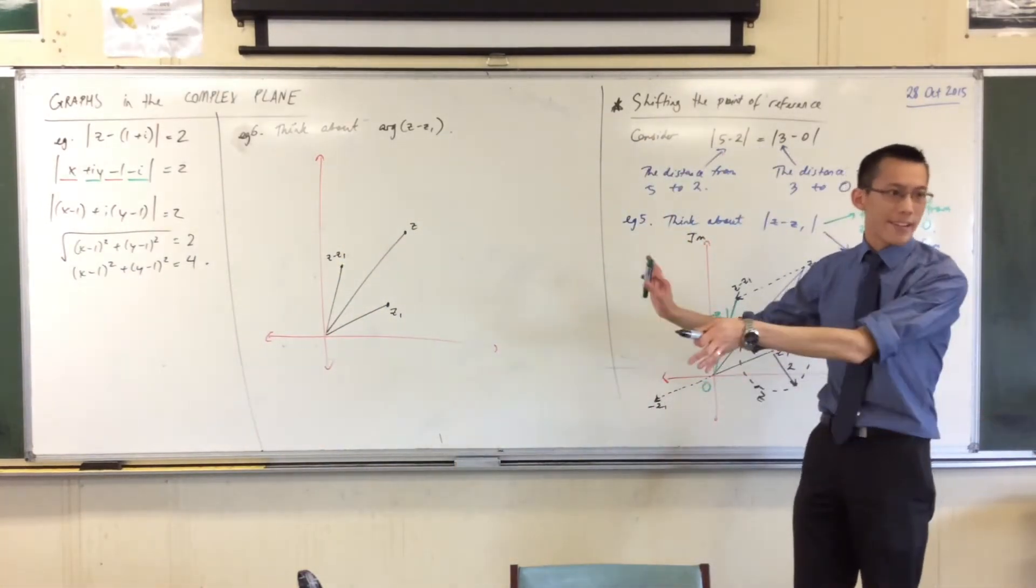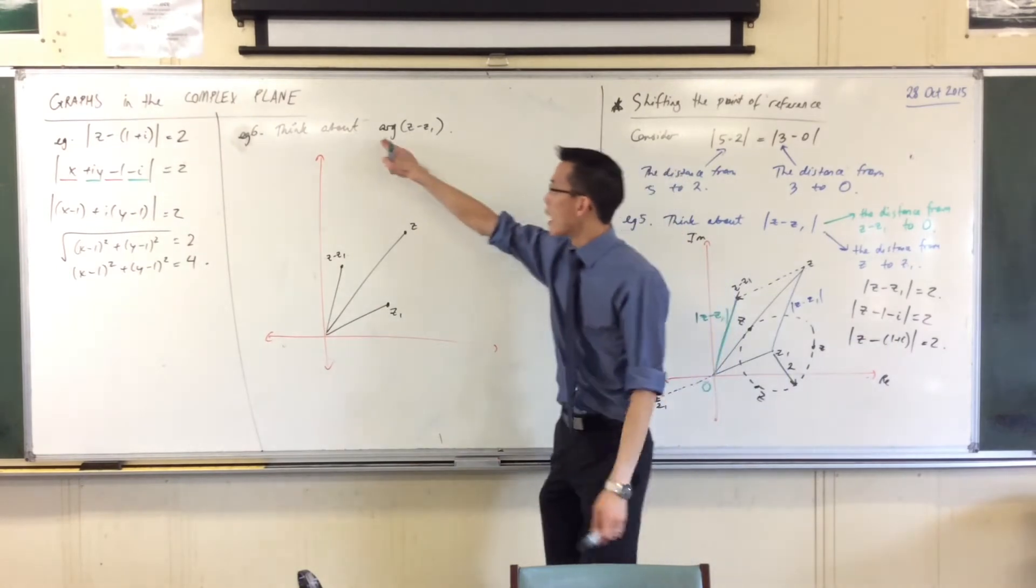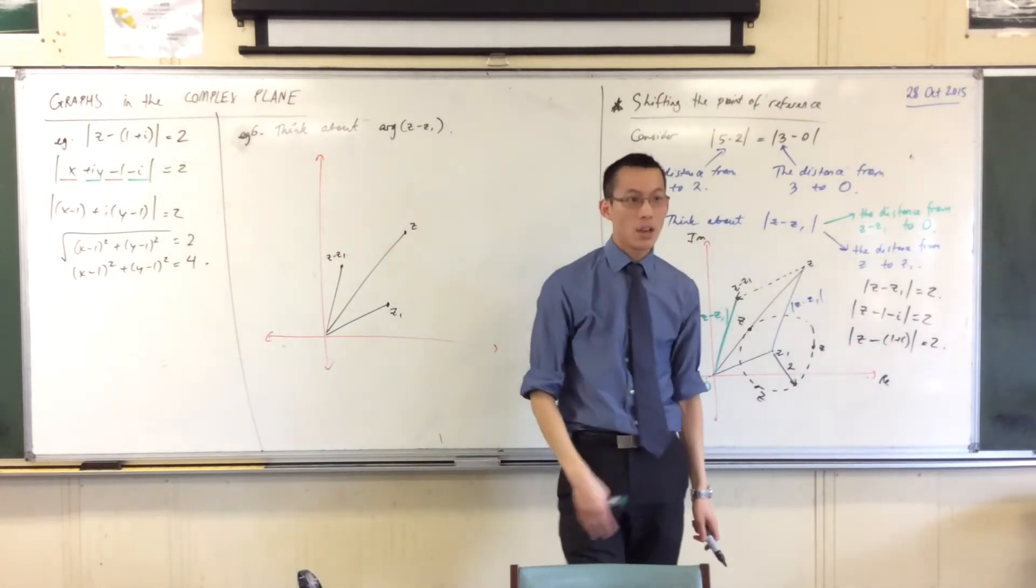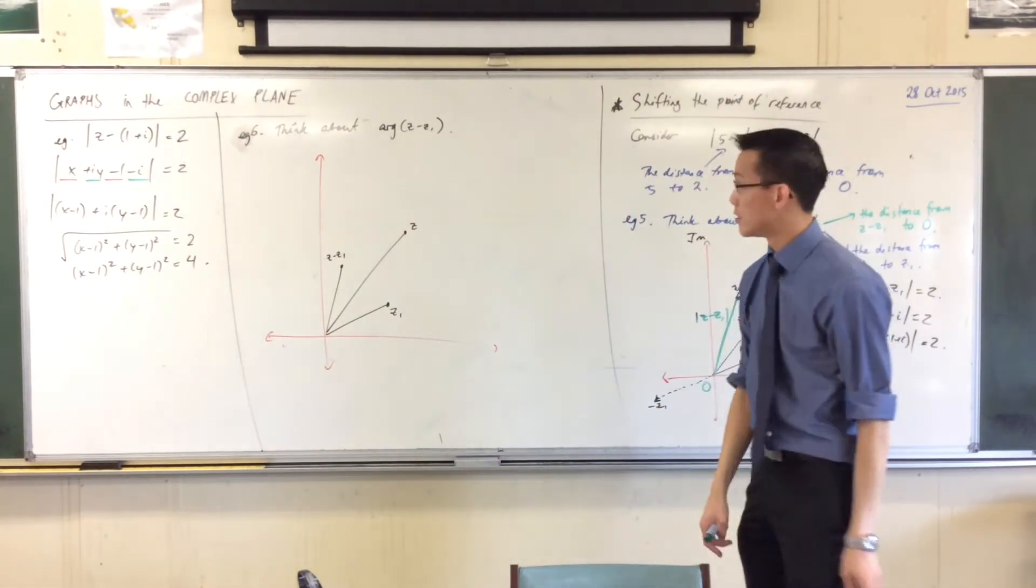What is, at least on the diagram as I have it, what is arg z minus z1? Or maybe I should say, where is arg z minus z1?